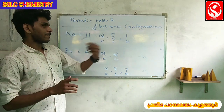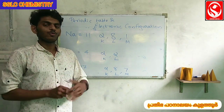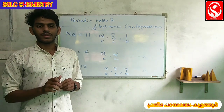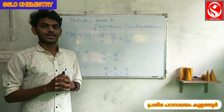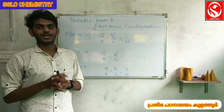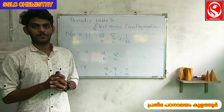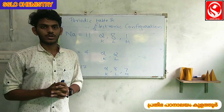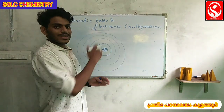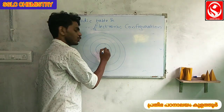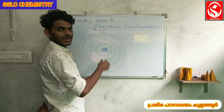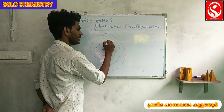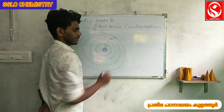In the newer methodology, we will see a new approach. The new electronic configuration is called the subshell electronic configuration. We will discuss this in this chapter. The shells K, L, M, N each have subshells.